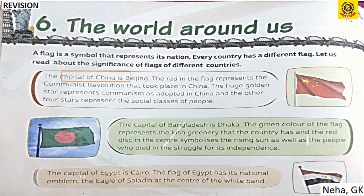First, the capital of China is Beijing. The red in the flag represents the communist revolution that took place in China. The huge golden star represents communism as adopted in China, and the other four stars represent the social classes of people.